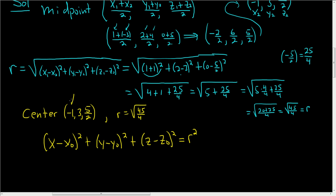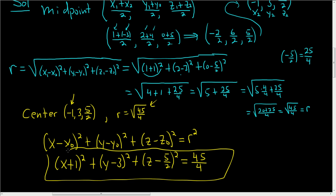So x0 here is negative 1, so it'll be x plus 1 squared. y0 is 3, so it's y minus 3 squared plus... and then z0 is 5 halves, so z minus 5 halves squared. And when we square the r, the square root goes away, so we end up with 45 over 4. And that is the final answer.